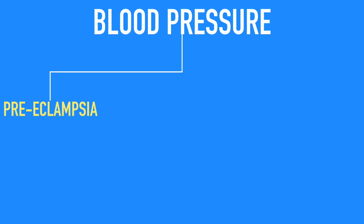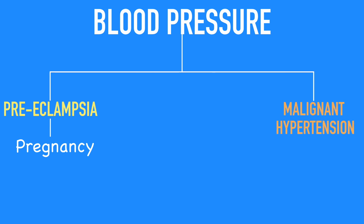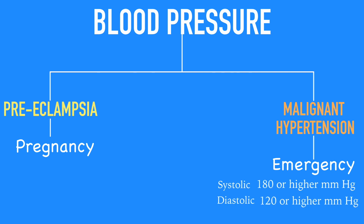There are two other types of hypertensive conditions you should know. One is preeclampsia — a pregnancy complication characterized by high blood pressure and signs of damage to another organ system, most often the kidneys. The second is a hypertensive emergency called malignant hypertension, a condition in which elevated blood pressure results in target organ damage. Hypertensive urgency, by contrast, is severely elevated blood pressure with no evidence of target organ damage. Unless intervention occurs promptly, a patient with malignant hypertension may experience renal failure, left ventricular failure, or stroke.